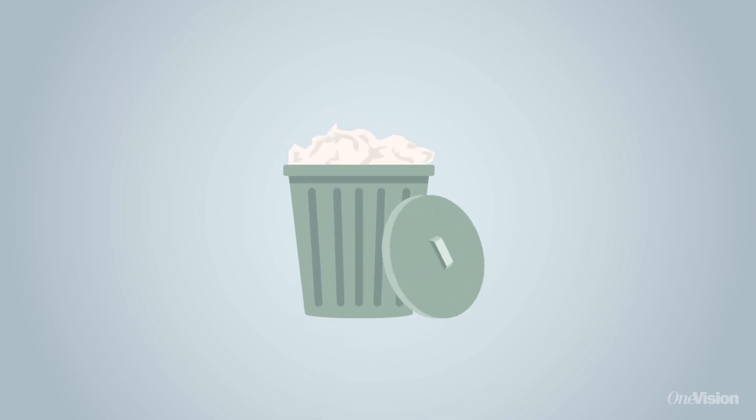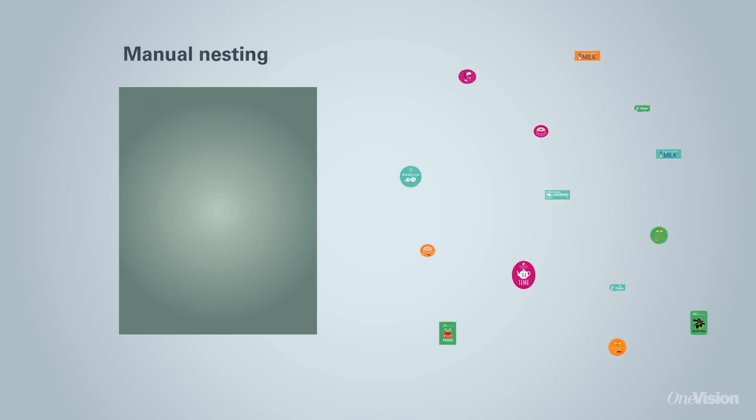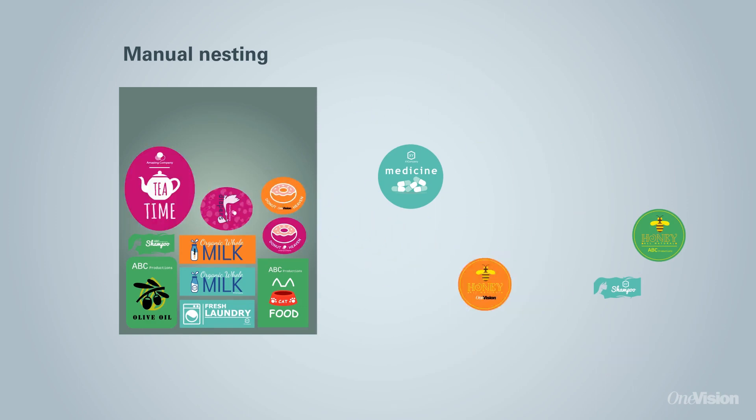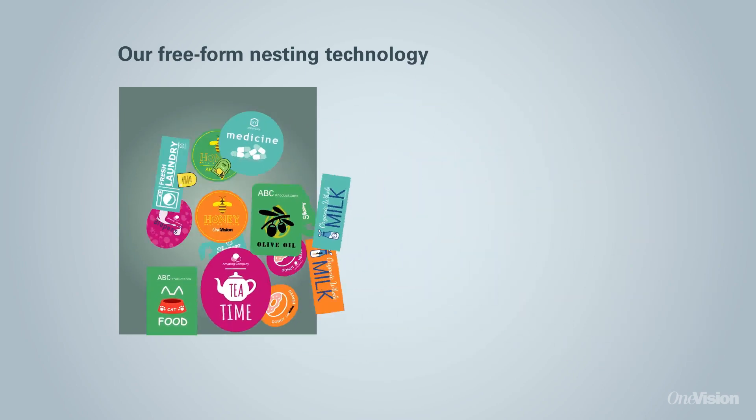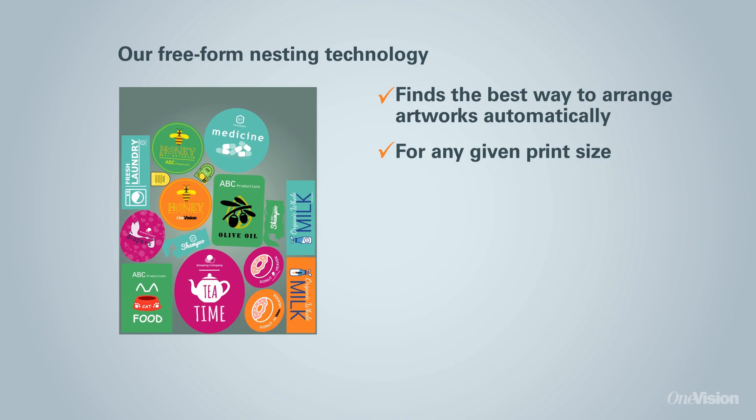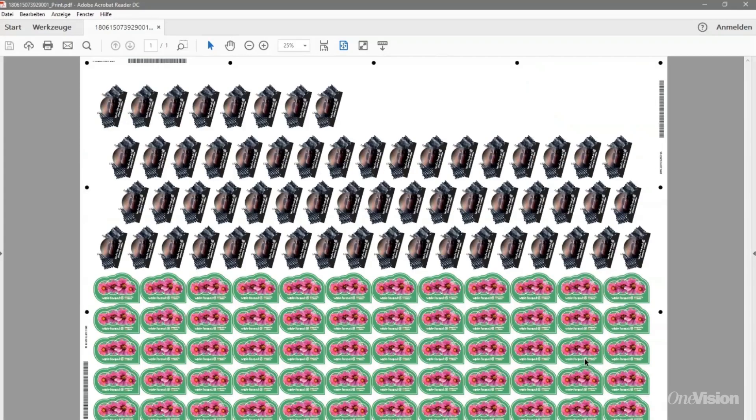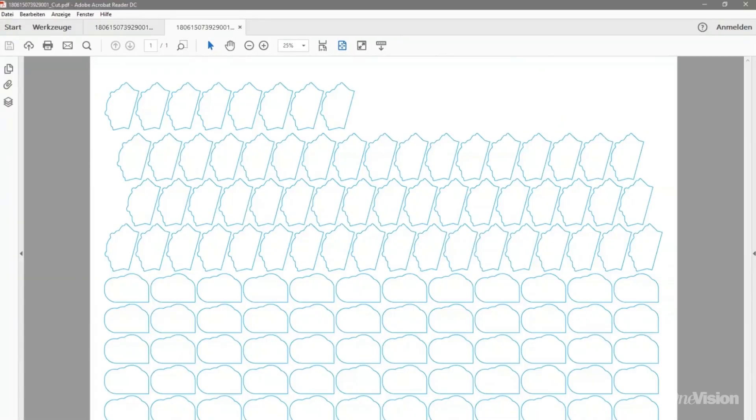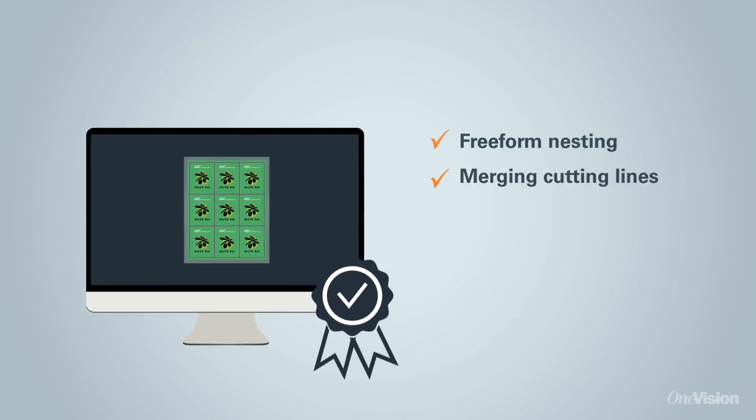Then there is the matter of waste. You produce jobs on expensive substrates such as vinyl or acrylic, and even though with a lot of effort you manually nest your files, there is always waste. Our free form nesting technology automatically finds the best way possible to arrange each piece of artwork for any given print size. It is fast and almost completely eliminates waste. You will benefit from state of the art technology and get answers for all your nesting questions.